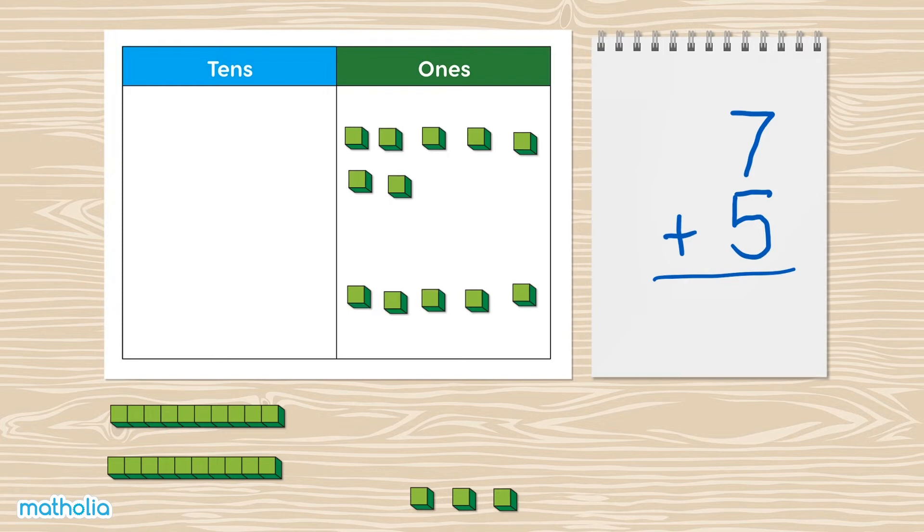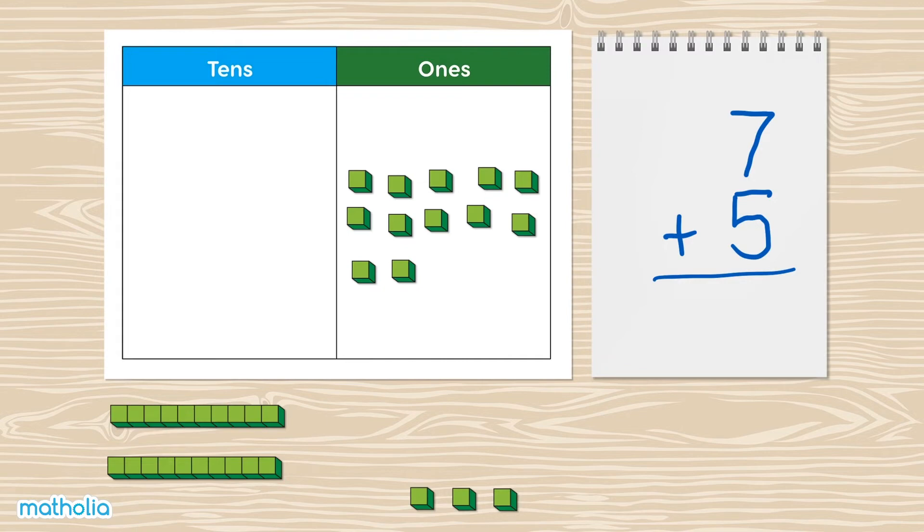Bring the ones together and find the total. There are 12 ones. So 7 plus 5 is 12.